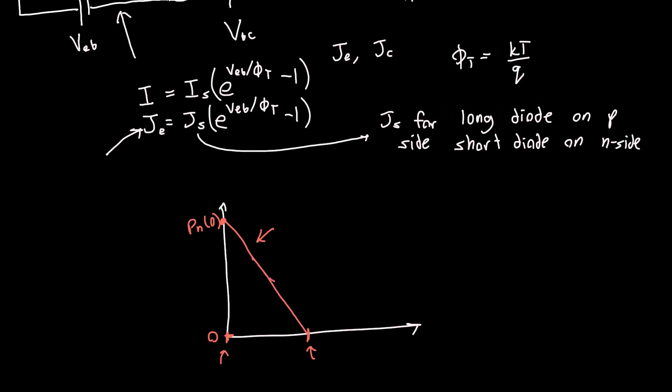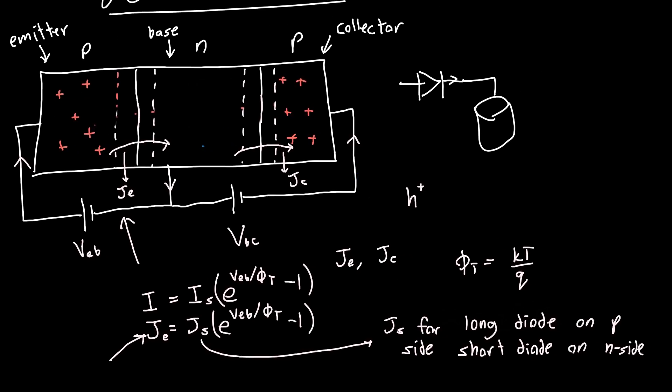Whereas for a long diode, we would expect this to exponentially fall off. So that's the only difference between the two. This seems like it's not going to be too hard. So can we find JC the same exact way? And the answer is actually no, because this is a diode but it's a reverse biased diode. So if you do the analysis, you're going to get that JC is equal to zero. But that doesn't seem right because we've got a bunch of holes flowing in from this left-hand side.